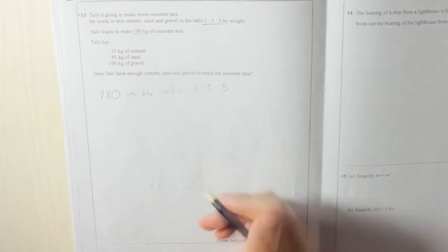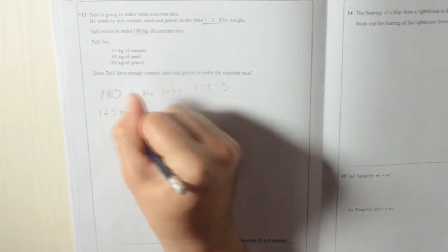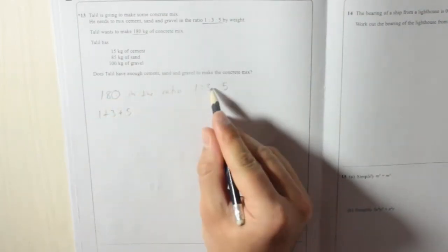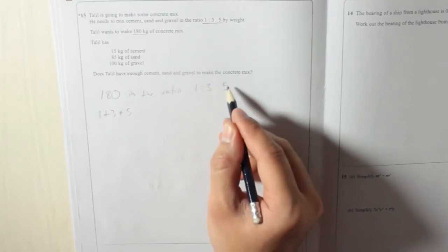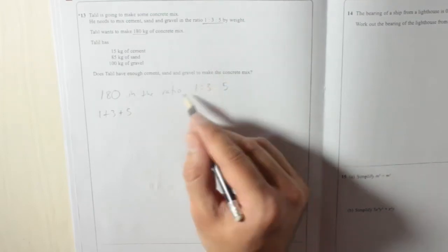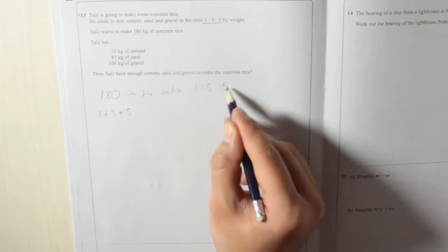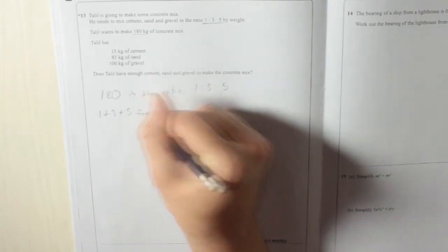So to do that, we're going to do 1 plus 3 plus 5. Because if there's one part cement, three parts sand and five parts gravel, that means overall there are 1 plus 3, 4 plus 5, 9 parts.